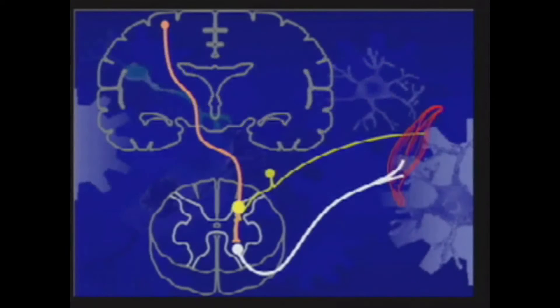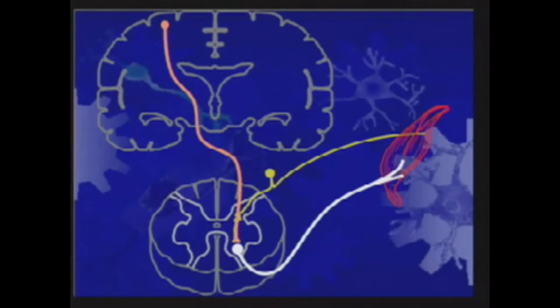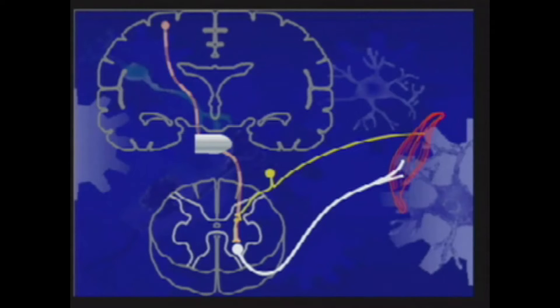In people with an intact spinal cord, neural circuits in the spinal cord are under direct control of brain centers, which allow for smooth, coordinated movements. After a spinal cord injury, the spinal circuits below the level of injury become hyperactive.